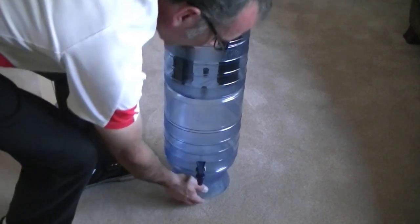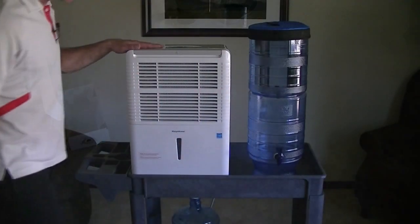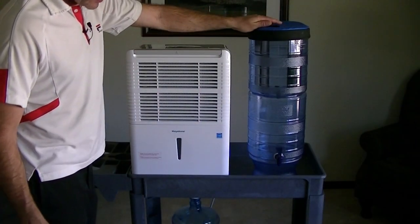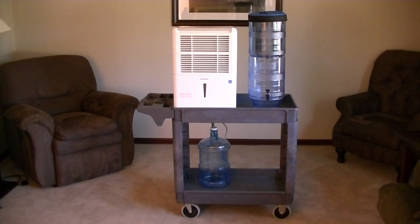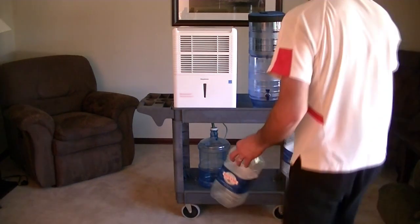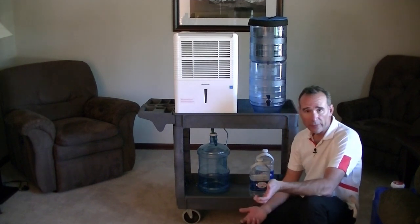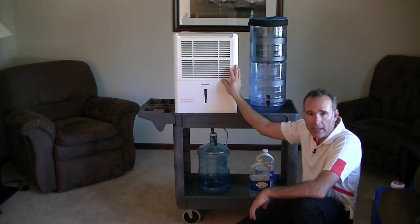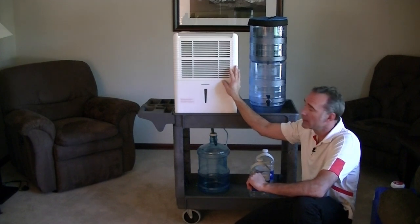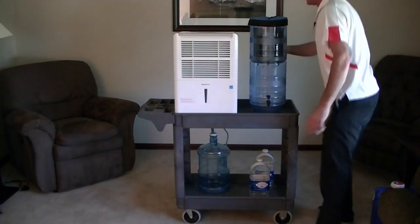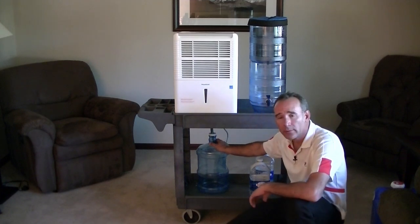Now we're going to set this Berkey water filter right on top next to our dehumidifier. So we've got our dehumidifier, our water purifier, and our water catch basin down here. So the next thing I want to do is store a few gallon jugs down at the bottom here. So just to go over what we've already discussed, we have our 70-pint dehumidifier, which is 8.75 gallons in 100% humidity. We have tapped it so the hose is coming out the back and the hose runs down to our 3-gallon water container.